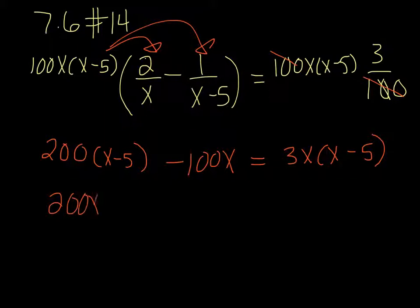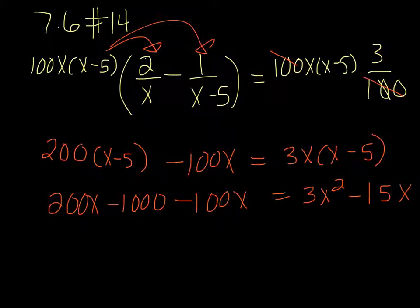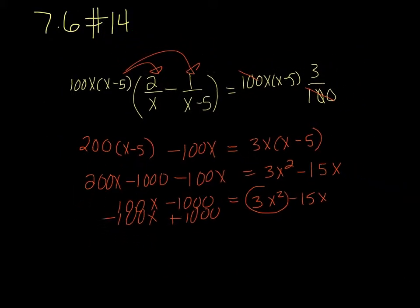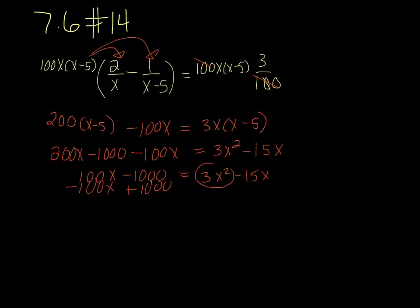So it's 200x minus 1,000 minus 100x equals 3x squared minus 15x. Combine like terms we get 100x minus 1,000 equals 3x squared minus 15x. And we have a quadratic going on here so we need to get everything on one side. So I'm going to subtract the 100x and add the 1,000 to both sides. So when I do that I end up with 3x squared and then I have a negative 15x minus 100x gives me negative 115x plus 1,000 equals 0.